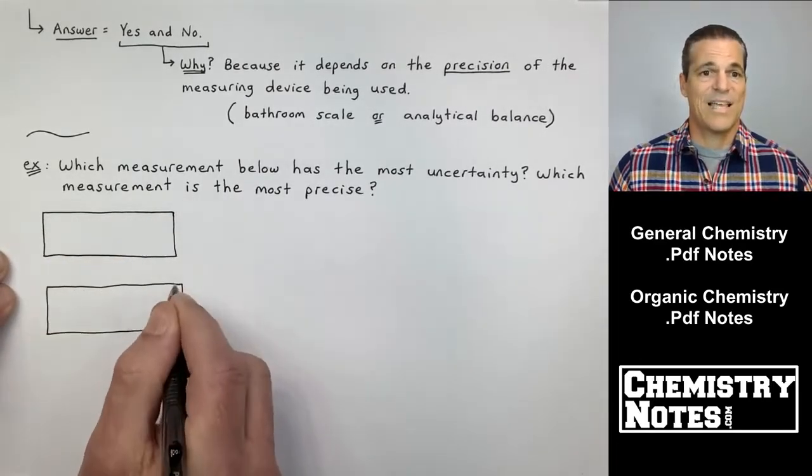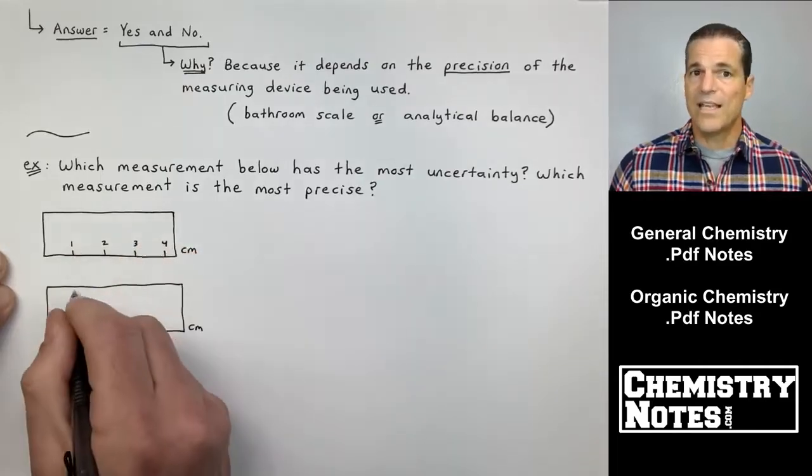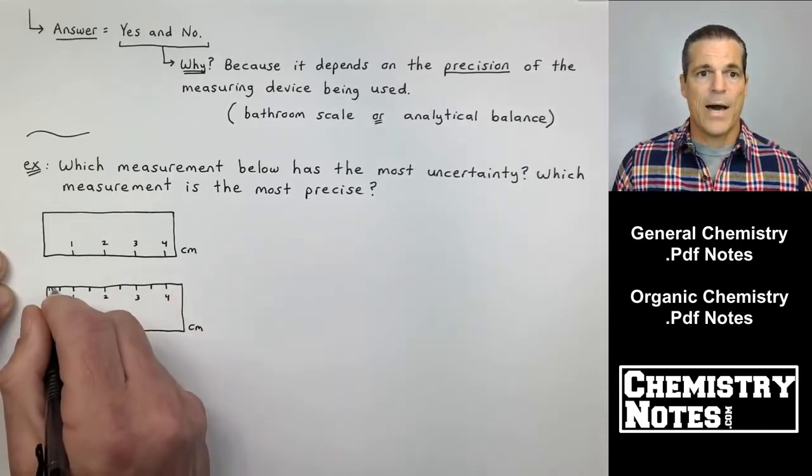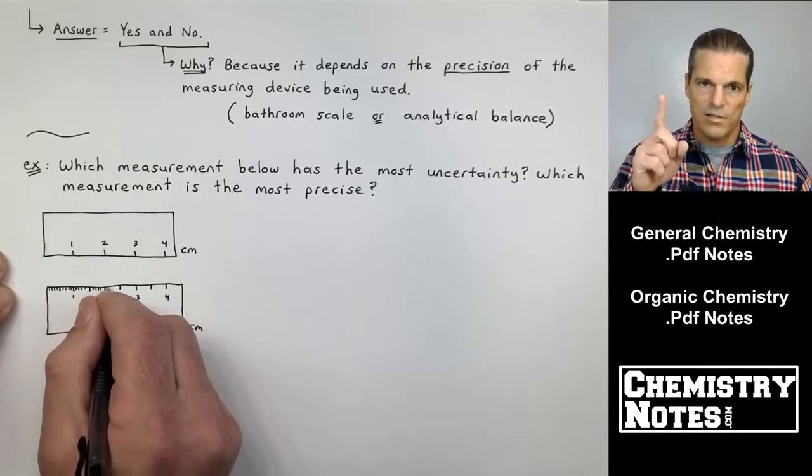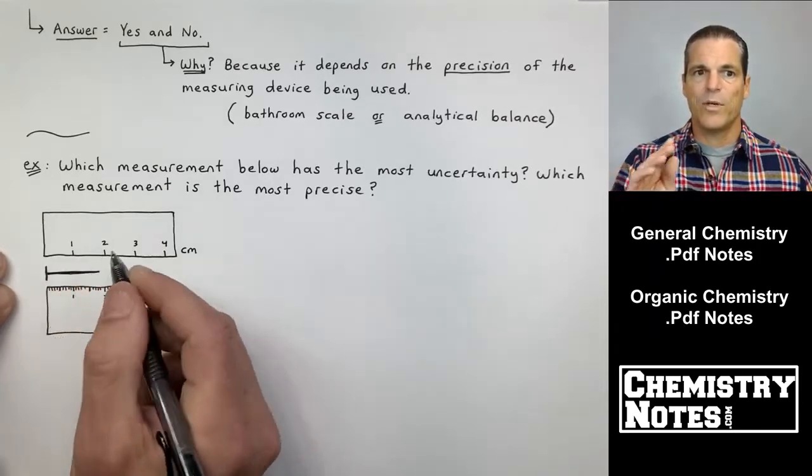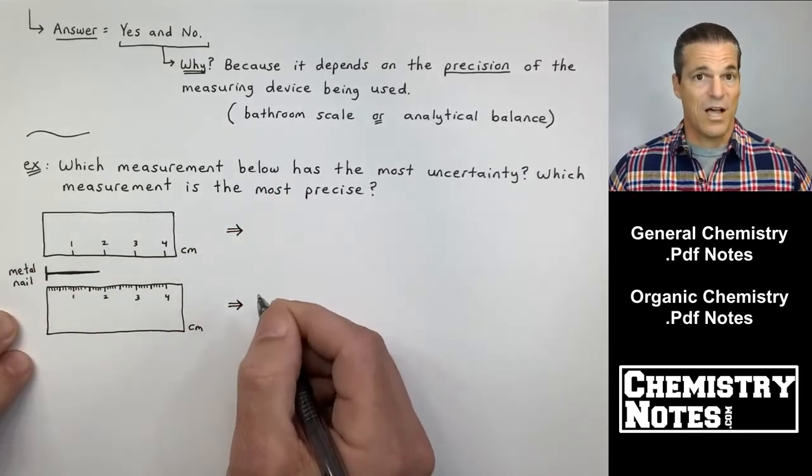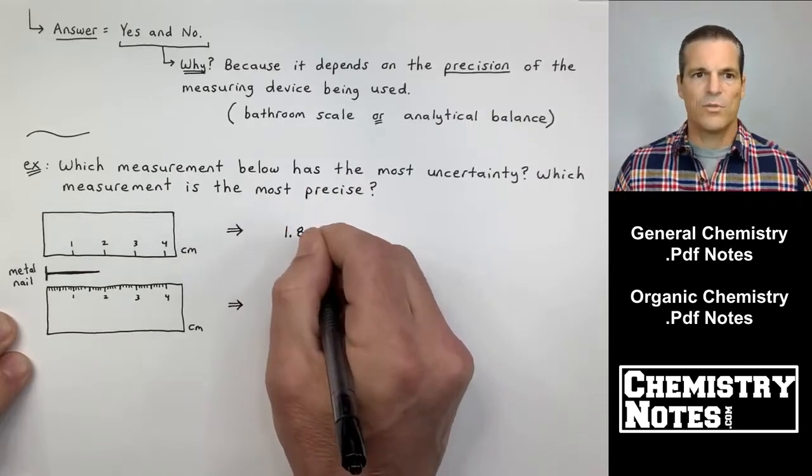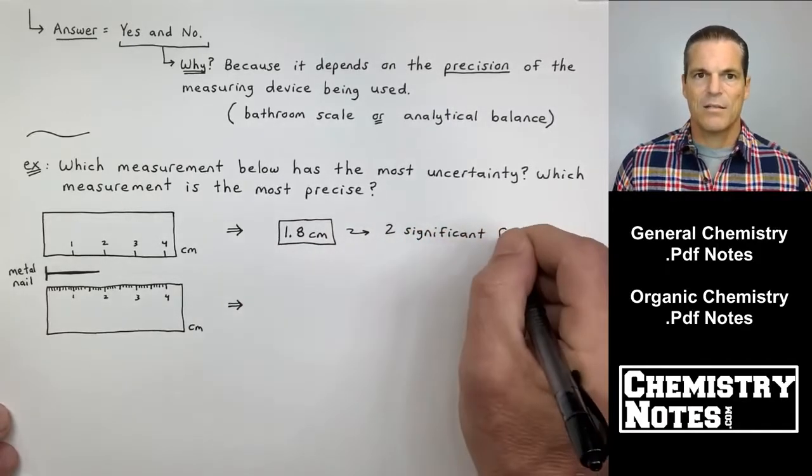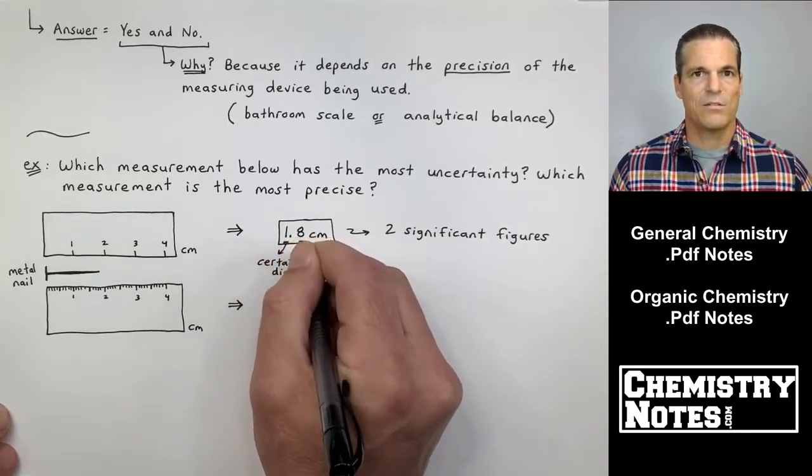These rulers are both in centimeters, but the ruler on top, it only gives me one, two, three, and four. Those are my little graduations or tick marks. The ruler on the bottom is showing me the tenths place. So, the ruler on top is only showing me the ones place. One, two, three, four. The ruler on the bottom is showing me tenths. In between each number, one, two, three, and four, I've got 10 little tick marks. So, the metal nail, according to the top ruler, I know for sure it's in between one and two because the one and two are tick marks. They're there. I can see them. My best guess is the eight. So, this is 1.8 centimeters. That has two significant figures. First time we've seen that phrase, two significant figures. More on that in a second.